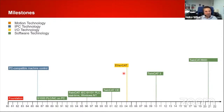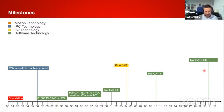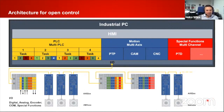EtherCAT remains the fastest Ethernet-based fieldbus. In 2010, TwinCAT 3 came out — based on multi-core and 64-bit. Now in 2020 we're talking about our next OS, TwinCAT BSD, which is the replacement for the expiring Windows CE.